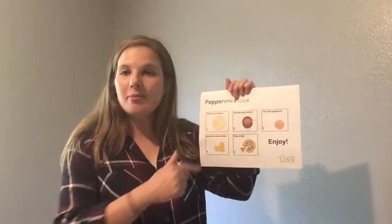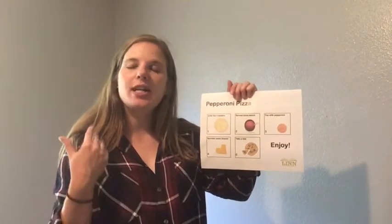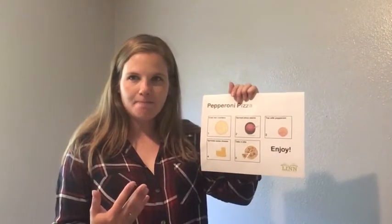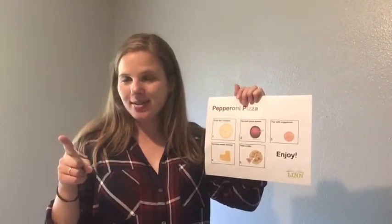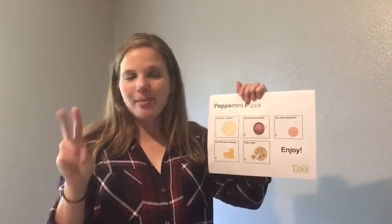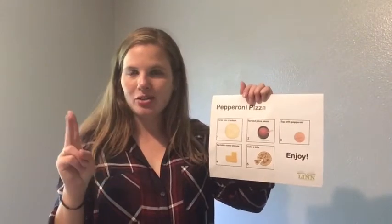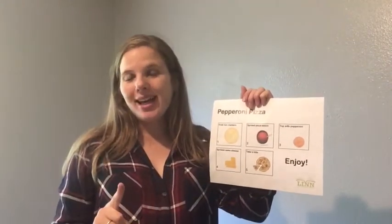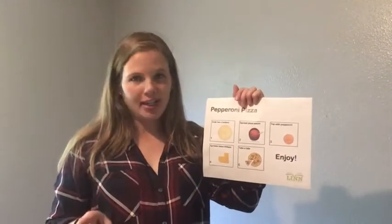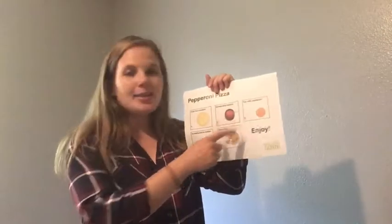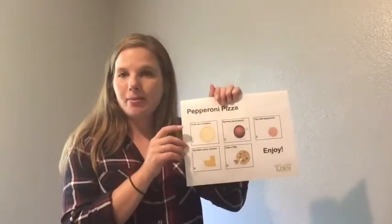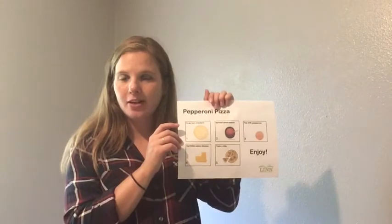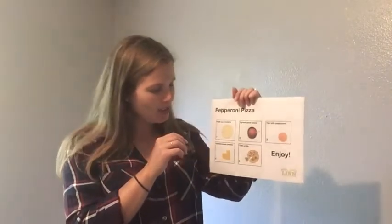Next we have pizza sauce. What were the different ingredients in our pizza sauce? Tomatoes — and bonus points if you can remember the other two — garlic and oregano. Next, we top it with pepperoni. From our story, where did pepperoni come from? Pigs. Good job.